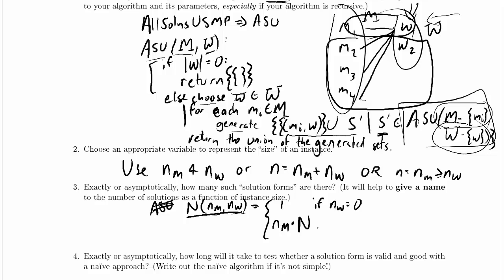So we can just call n again. This is nm times n of nm minus 1 comma nw minus 1. Why minus 1? Because we're removing one element from each set.